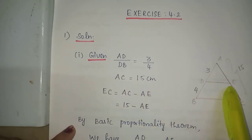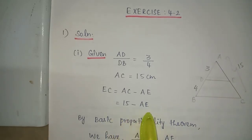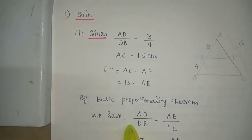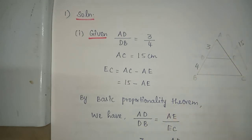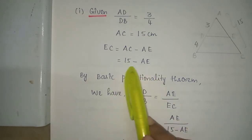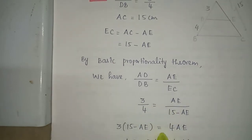From that we can find EC is equal to AC minus AE, which is equal to 15 minus AE. By using the basic proportionality theorem, AD by DB is equal to AE by EC. Substituting values: 3 by 4 is equal to AE divided by 15 minus AE. The next step is cross multiplication.